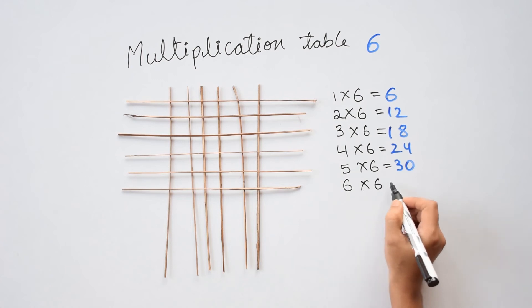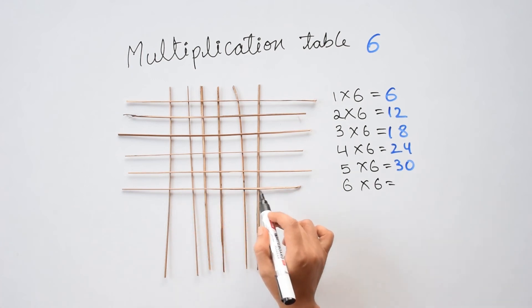Next, 6 times 6 equals to 31, 32, 33, 34, 35, 36.